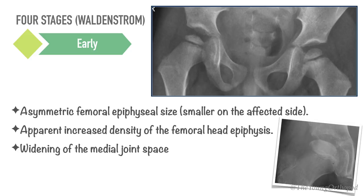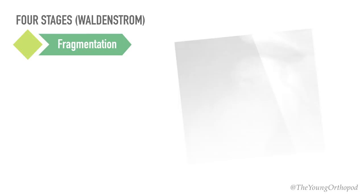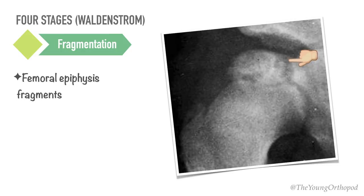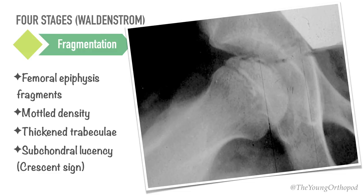In the fragmentation stage, the repair aspects of the disease become more prominent. The bony epiphysis begins to fragment, with areas of increased radiolucency and increased radiodensity. The increased radiodensity may be caused by new bone forming on old bone and thickening of existing trabeculae. The subchondral radiolucent zone — the crescent sign — results from subchondral stress fracture, and the extent of this zone determines the extent of the necrotic fragment.